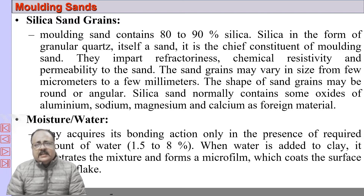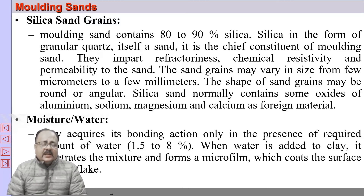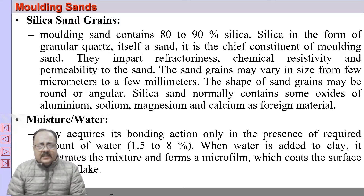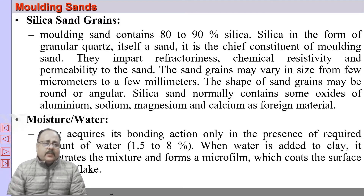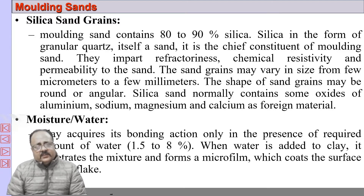Silica is chemically inactive. Because there are sand grains, there is space between each individual grain so that gases can escape. The sand grains vary in size and shape, which is very important. We will be discussing what type of sand should be used and what the size of the sand should be, as that is also very important in molding sand.